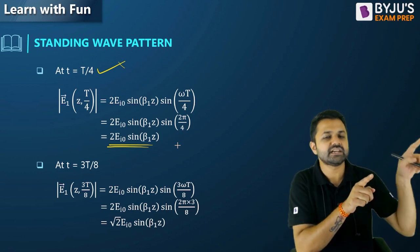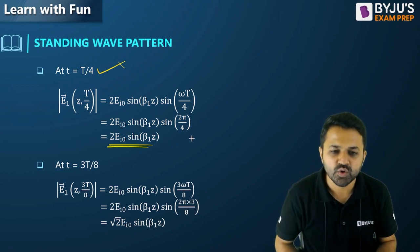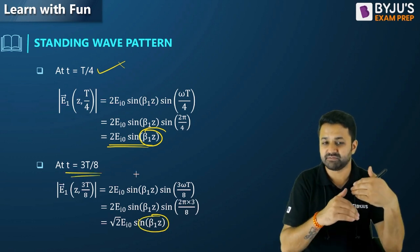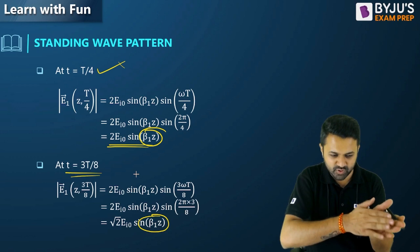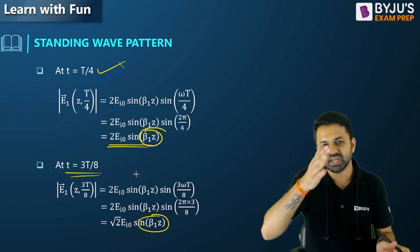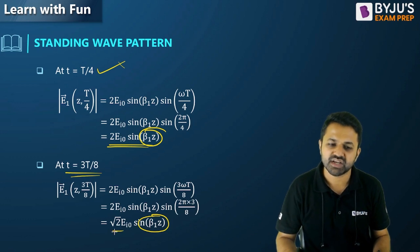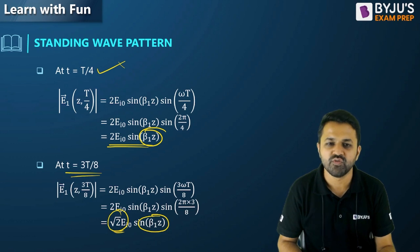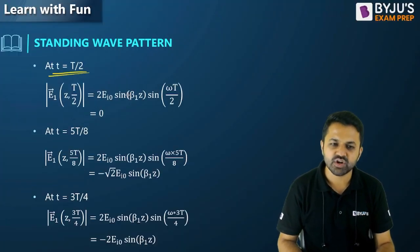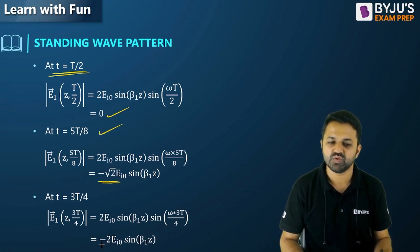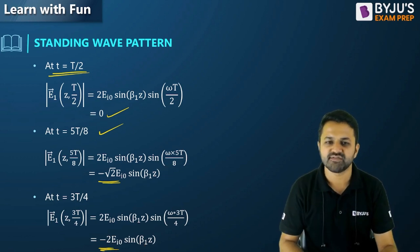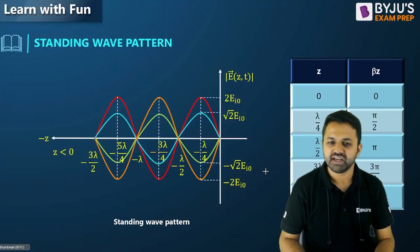Continuing through time steps: at t = 3T/8 the amplitude returns to √2; at t = T/2 the amplitude is 0 again. At t = 5T/8 the amplitude is −√2, and at t = 3T/4 it reaches the negative maximum of −2. So as time changes from 0 through T, only the amplitude oscillates while the spatial pattern β1z remains fixed.